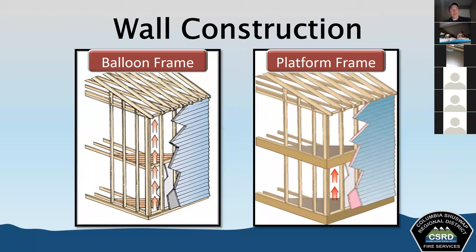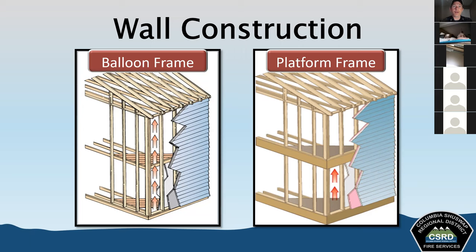Balloon frame vs. platform frame construction: in balloon frame, wood studs are continuous from the basement all the way up to the roof level, creating a top-to-bottom path for fire spread with nothing to stop it. In platform frame construction, the exterior wall studs are not continuous — there is a break at each floor level. Fire coming up will hit that platform and will not be able to extend into the ceiling area. The floors are built as platforms, effectively slowing fire travel.